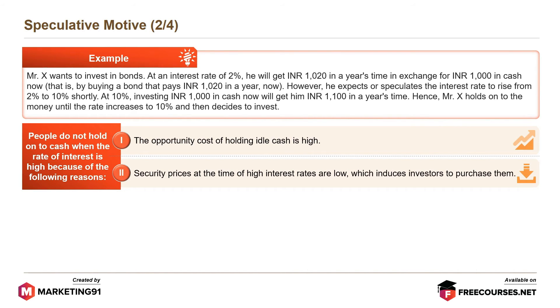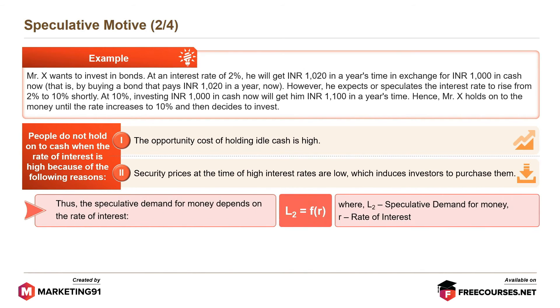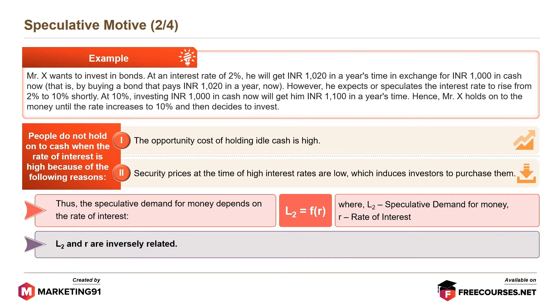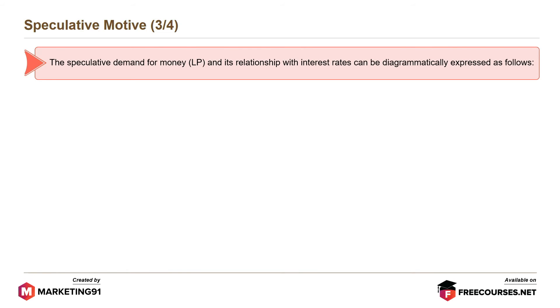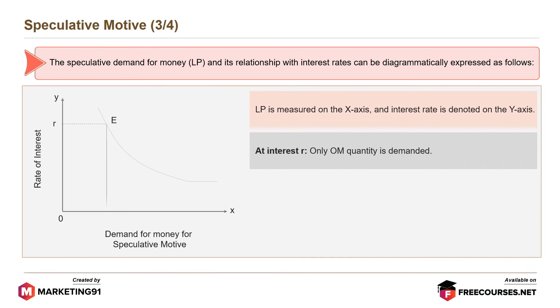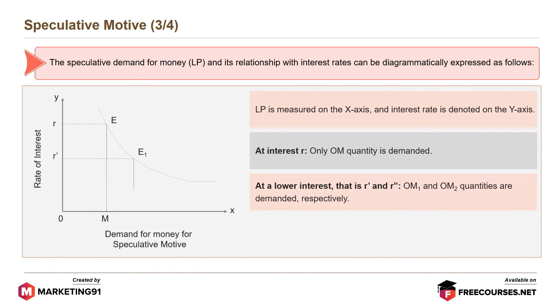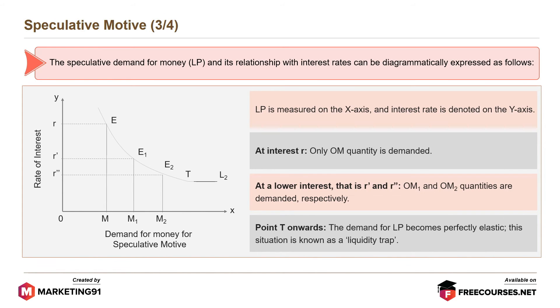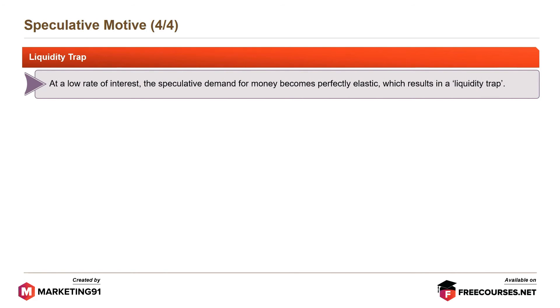Security prices at the time of high interest rates are low, which induces investors to purchase them. Thus, the speculative demand for money depends on the rate of interest, i.e., L2 is a function of R, where L2 is the speculative demand for money and R is the rate of interest. L2 and R are inversely related. The speculative demand LP and its relationship with interest rates can be diagrammatically expressed as: LP is measured on the x-axis and interest rate on the y-axis. At interest R, only OM quantity is demanded. At lower interest rates R' and R'', OM1 and OM2 quantities are demanded respectively. From point T onwards, the demand for LP becomes perfectly elastic, a situation known as the liquidity trap.